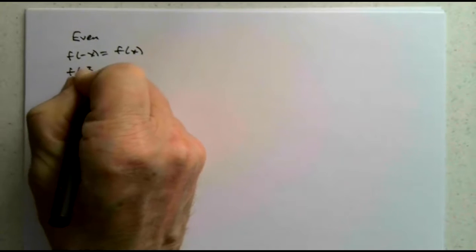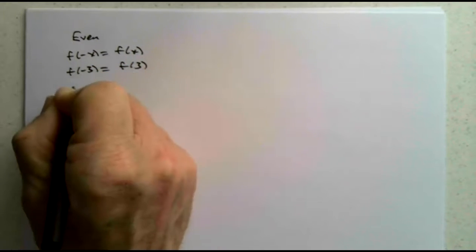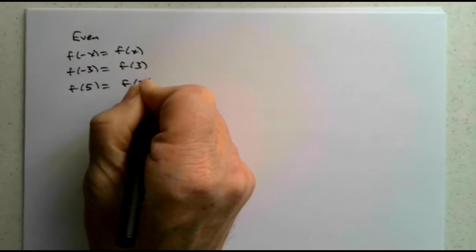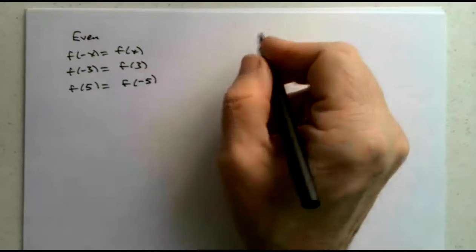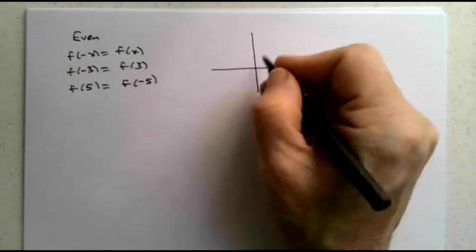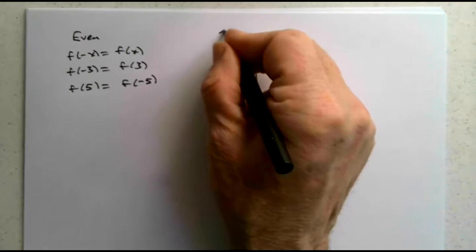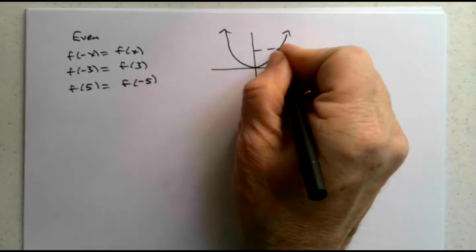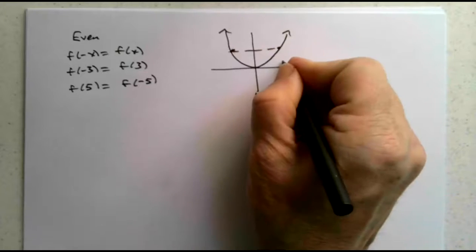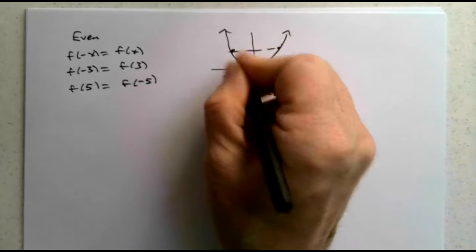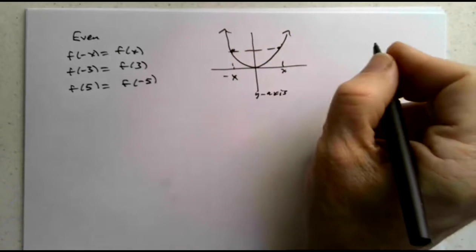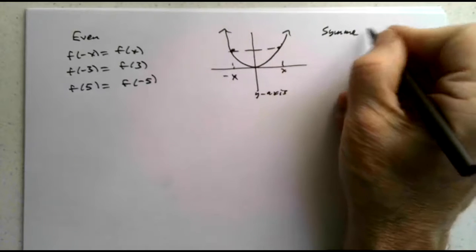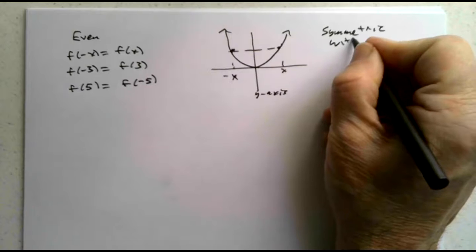For example, f of negative 3 would have to be the same as f of 3. f of 5 would have to be the same as f of negative 5. And in terms of symmetry, here's our standard version of an even function. The y-axis acts as a mirror — same across the way. Notice this would be x, the height is f of x; this would be negative x, the height is the same. So f of negative x is the same as f of x.